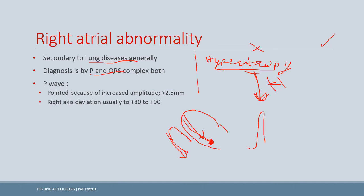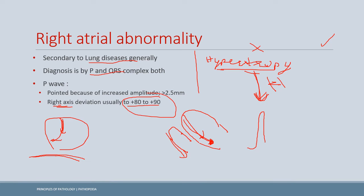The second feature of right atrial abnormality is right axis deviation. In chronic obstructive pulmonary disease or emphysema patients, the dome of the diaphragm is flattened, causing the heart to become more vertical. This shifts the mean electrical axis of the heart to the right, resulting in right axis deviation in right atrial abnormality.